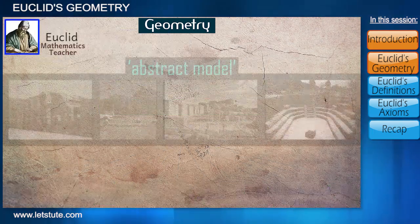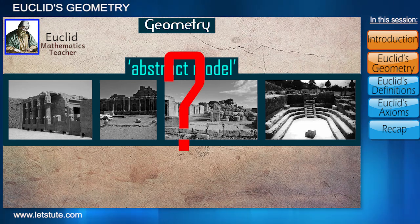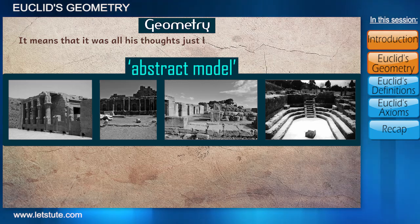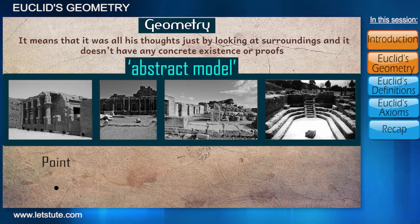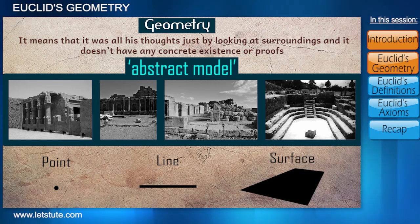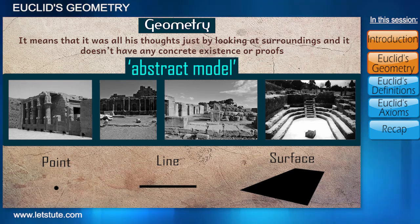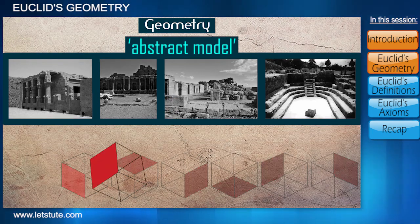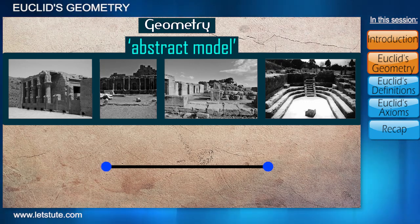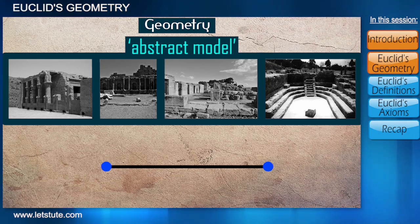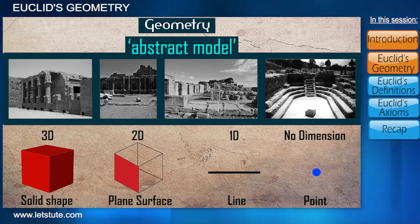Euclid's approach towards geometry was an abstract model of the surroundings of that time. It means it was all his thoughts just by looking at the surroundings and it does not have any concrete existence or proofs. What is a point, a line, a surface and various other things were derived just by looking at what's present in the world. For example, take a solid shape like a cube — it has six surfaces, each surface has four sides, and each side has two points. As we move down, we lose one dimension each time: a solid shape is 3D, a surface is 2D, a line is 1D, and a point does not have any dimension.